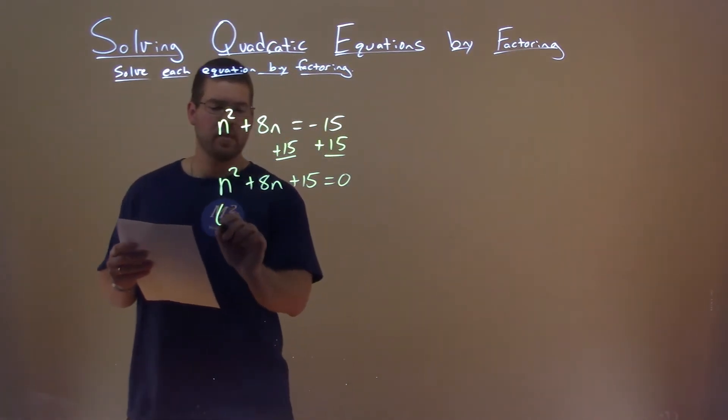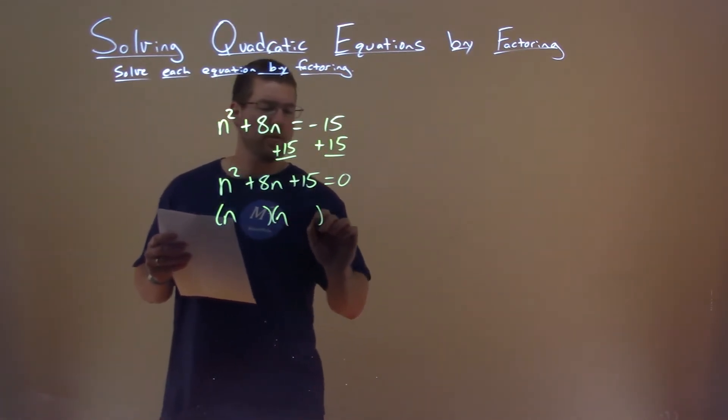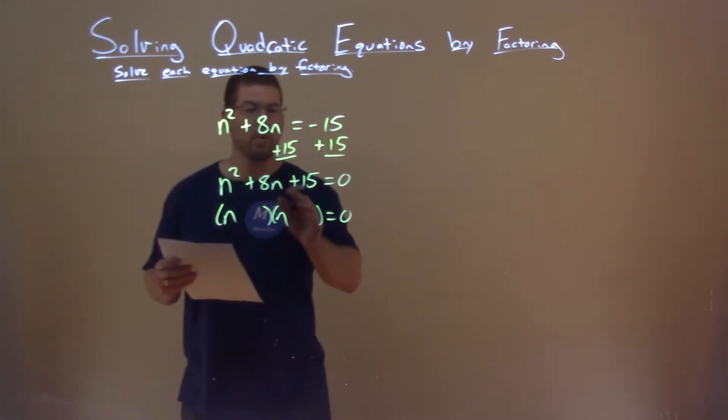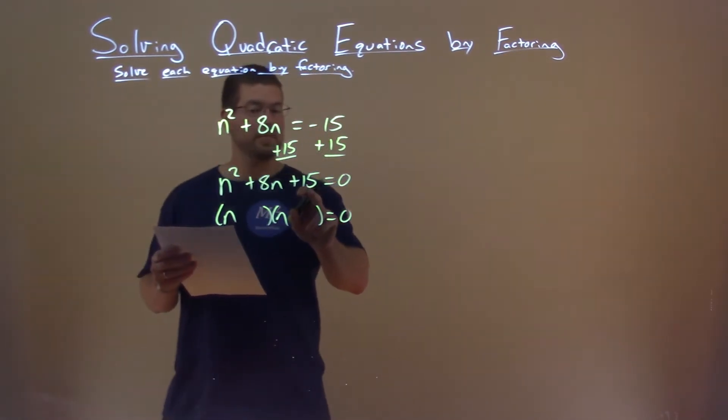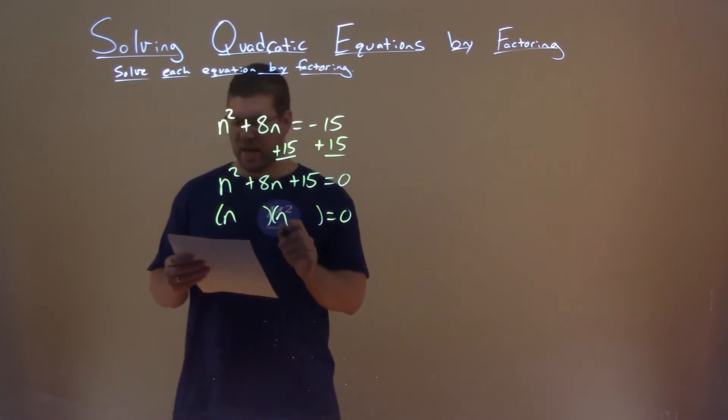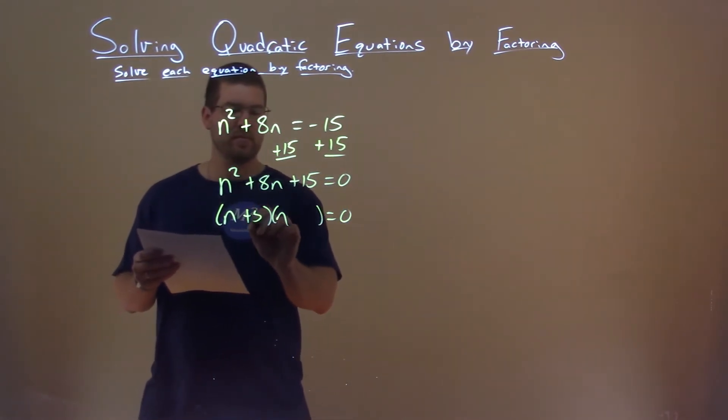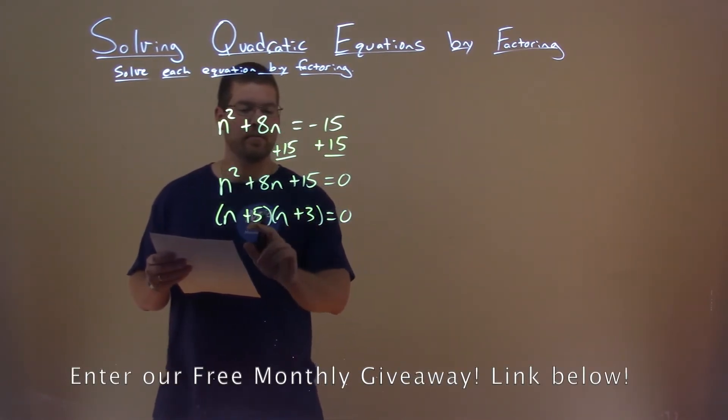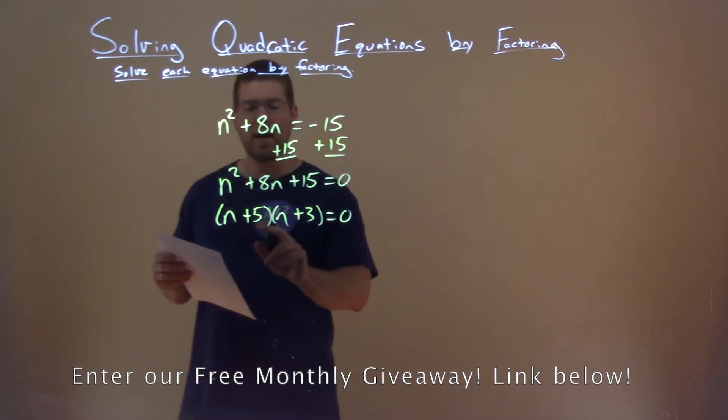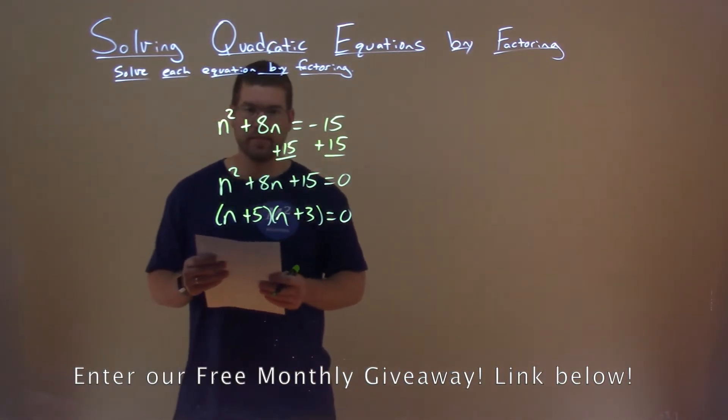So now we can factor. We have this form here, and we have to ask ourselves what two numbers multiply to be 15 and add to be 8. That's actually fairly simple. We have 5 and 3. 5 times 3 is 15, 5 plus 3 is 8.